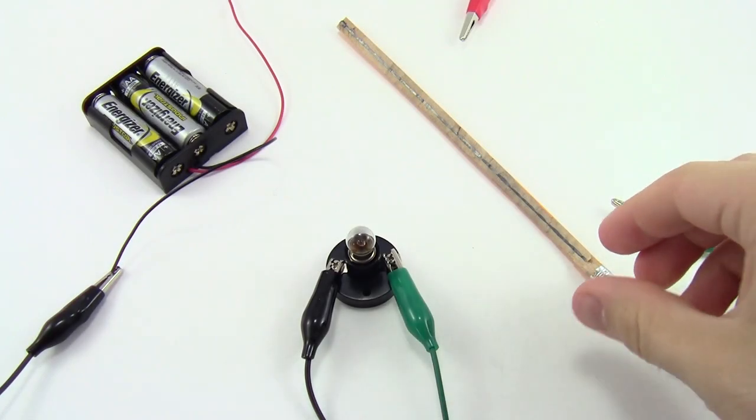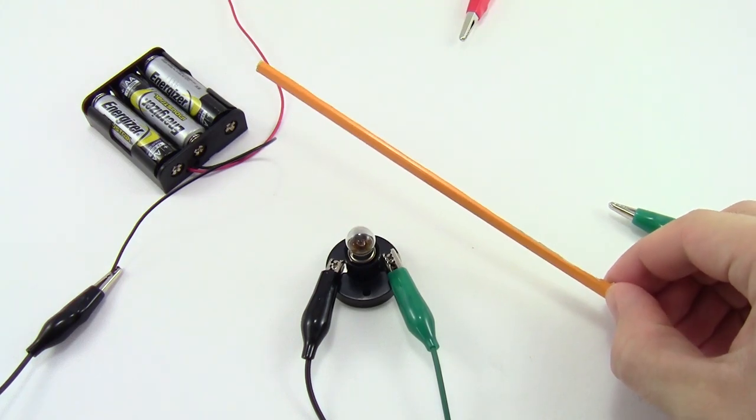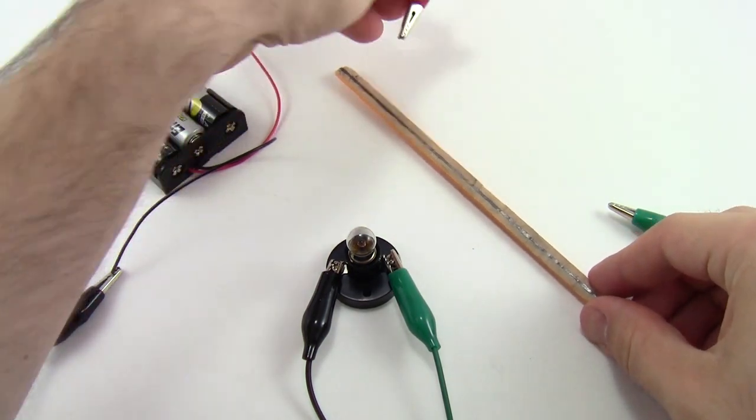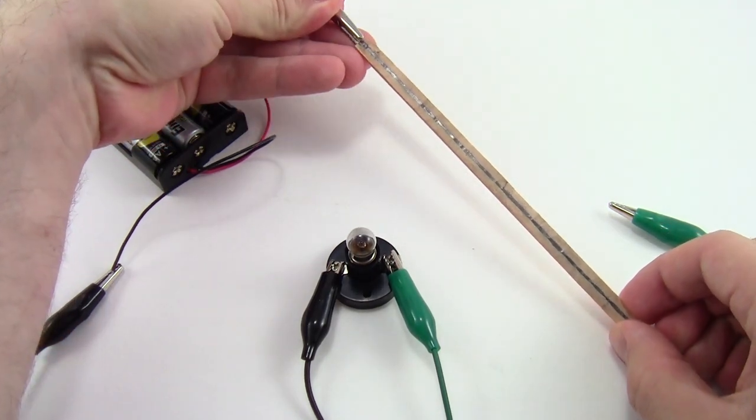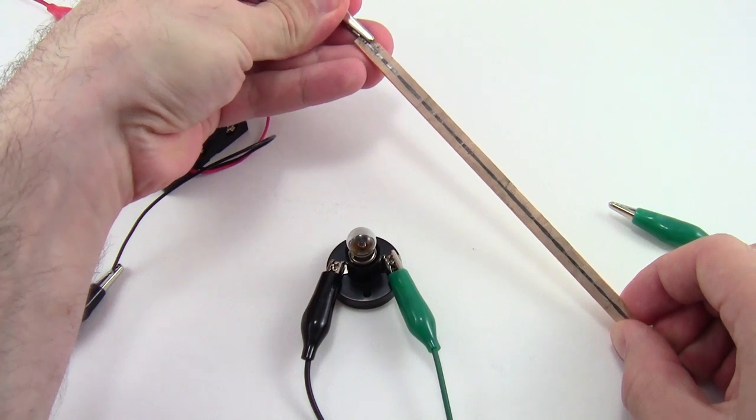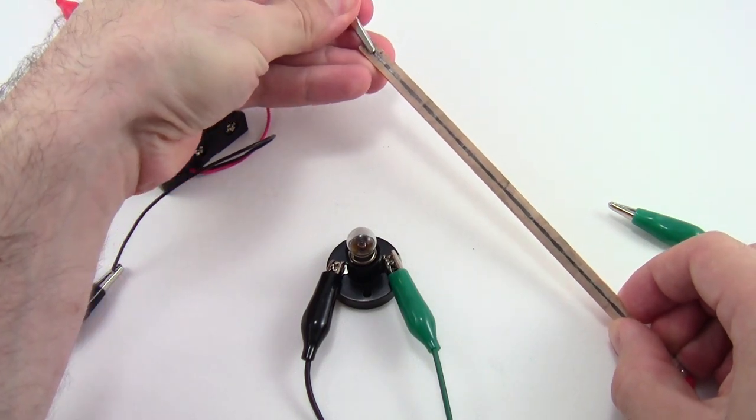For the dimmer switch project, you will make a slider by whittling away one half of a wooden pencil. To connect the slider to your circuit, you will connect one of the alligator clips to the graphite core on one end, and then use the other alligator clip as a slider to press down on the graphite along the length of the pencil.